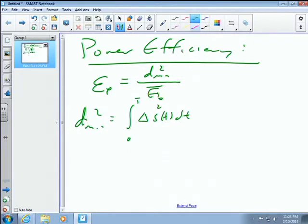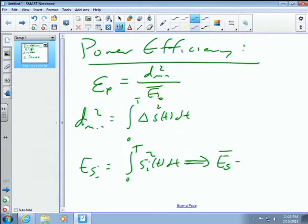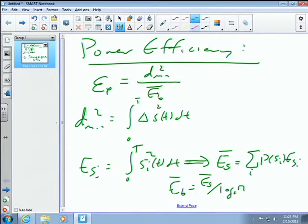And then to find EB bar, you need to find out what ESI is, which is equal to the integral from 0 to T of SI of T squared DT. And then from that, you calculate what ES bar is by summing, weighing each by the probability that that SI occurs.